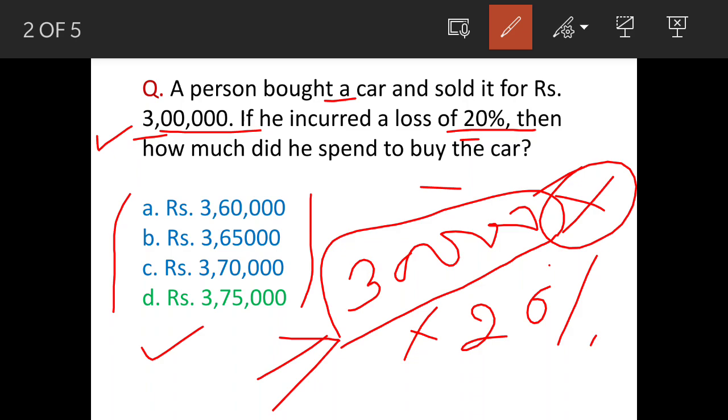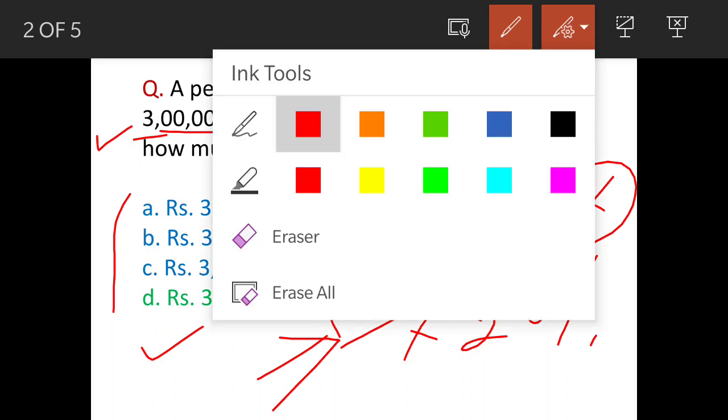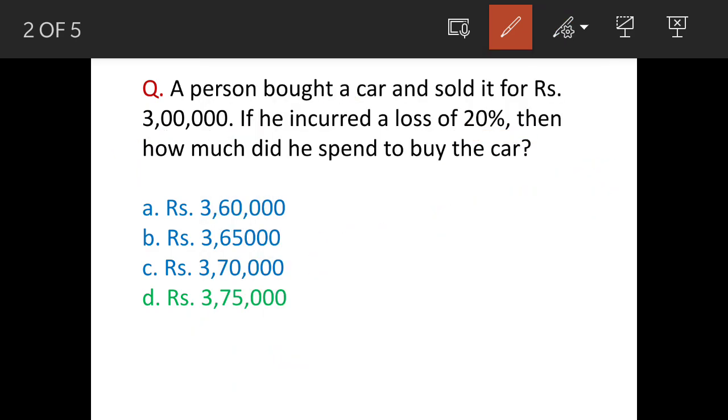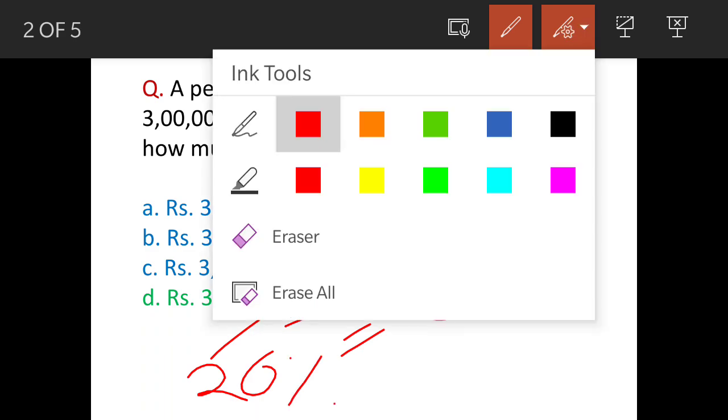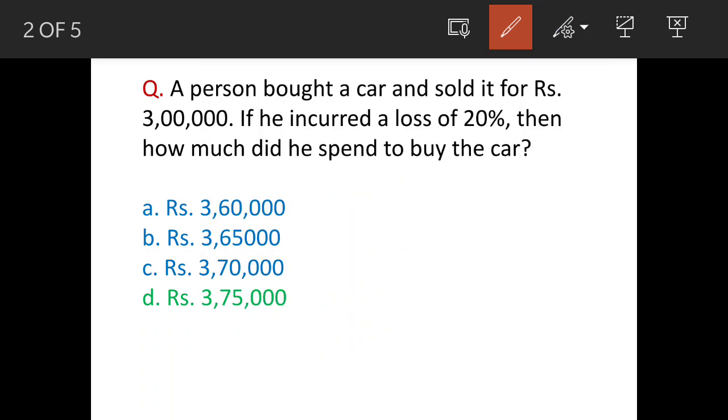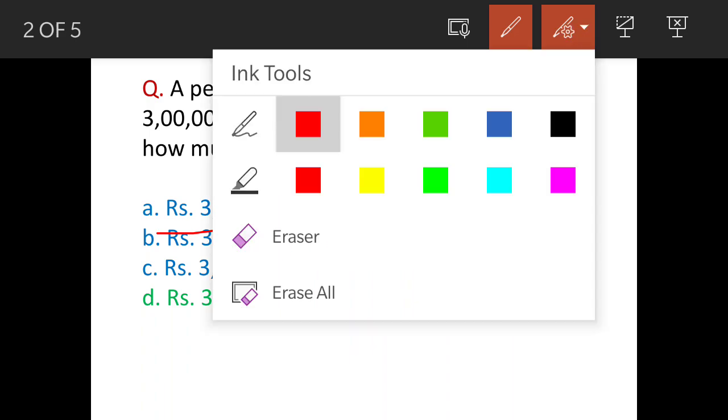How much more is it going to be? Because this three lakh actually represents - three lakh is actually representing eighty percent. So if you work out the loss percentage based on this figure of three lakh rupees twenty percent, then you will end up with option A, which is not actually correct.